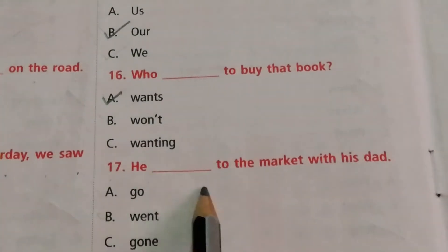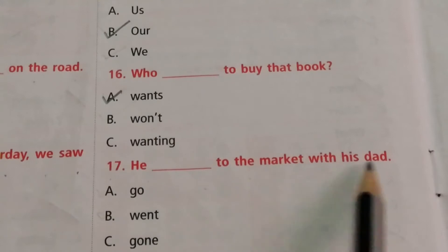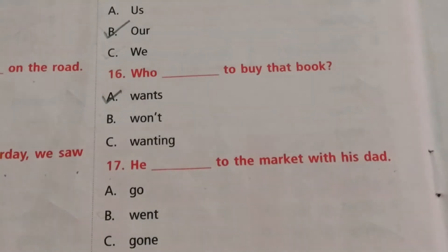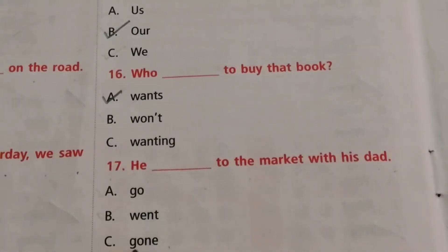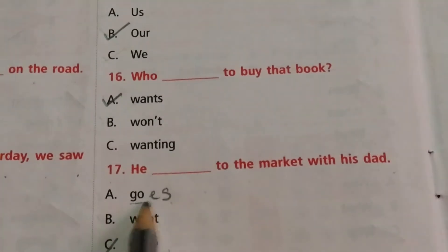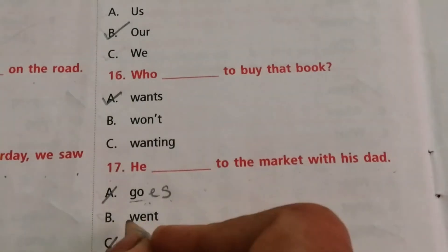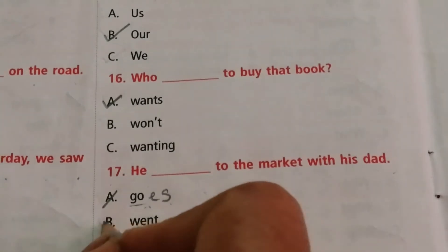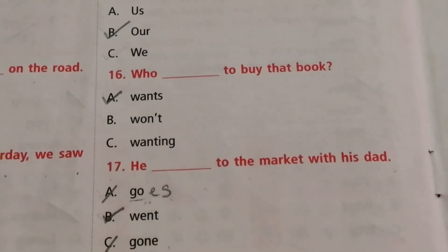Question 17: He ___ to the market with his dad. Options are go, went, gone. 'Gone' is a participle, so not the answer. 'Go' may seem possible but is not correct. The answer is went. He went to the market with his dad.